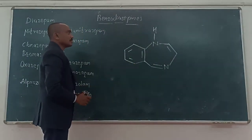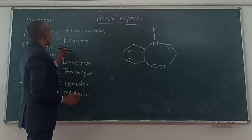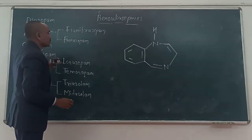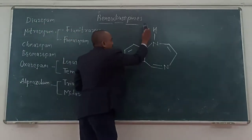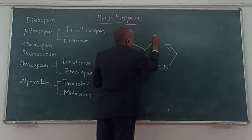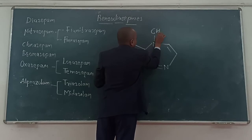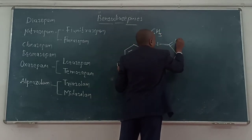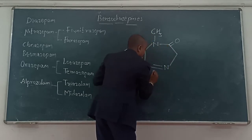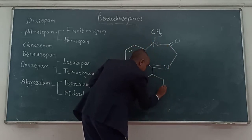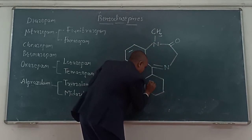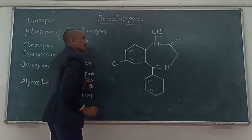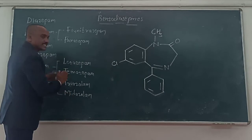This is the basic ring structure by which we can get all these drug structures. For diazepam, the ring contains a methyl group and an oxo group. At the 5 position it contains a phenyl ring, and at the 7 position it contains chlorine. So this structure is for diazepam.